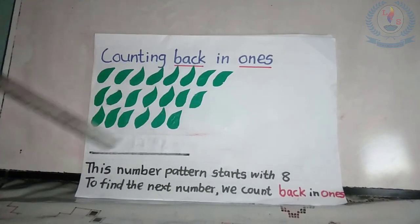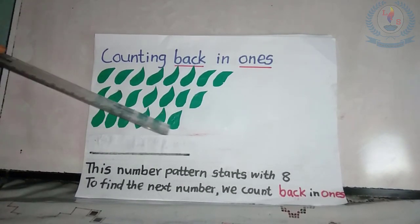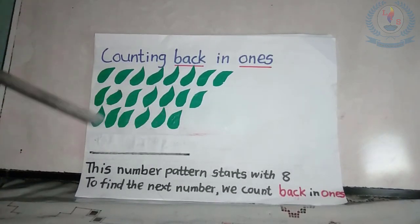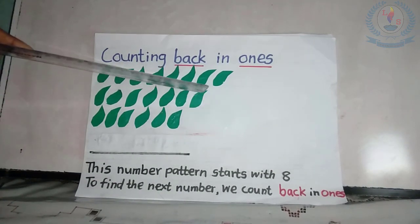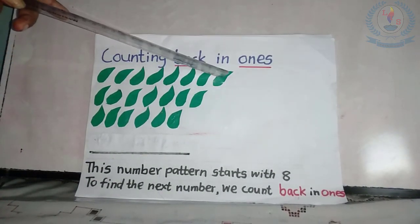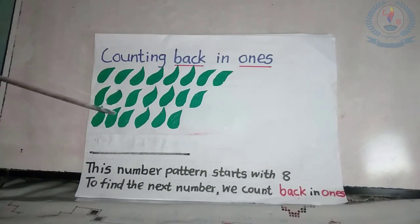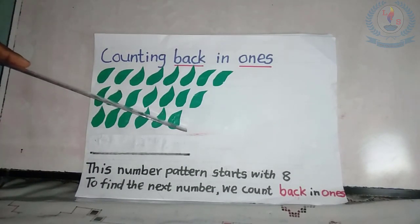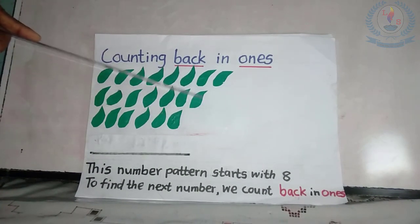The third row: 1, 2, 3, 4, 5, 6. The number of leaves in each row is 1 less than the previous row.